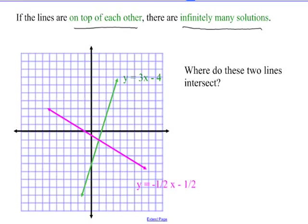If we look at this graph, we've graphed two lines: y equals 3x minus 4 and y equals negative one-half x minus one-half. We're looking for where those two lines intersect. They intersect right here at the point (1, -1). This is their solution point.